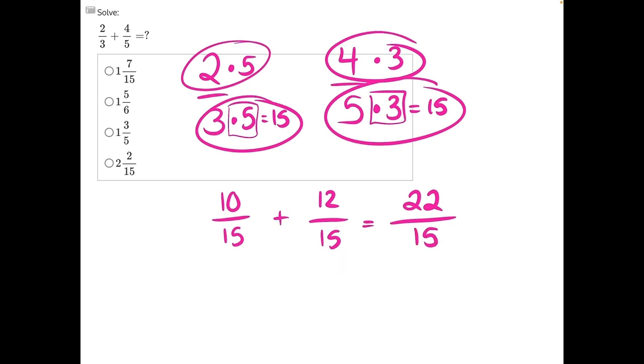Now, we have an improper fraction that we need to rewrite as a mixed fraction, since all of our answer choices are in mixed fraction form. So, we must ask ourselves, how many times can 15 go into 22 evenly? And the answer is just 1 time.